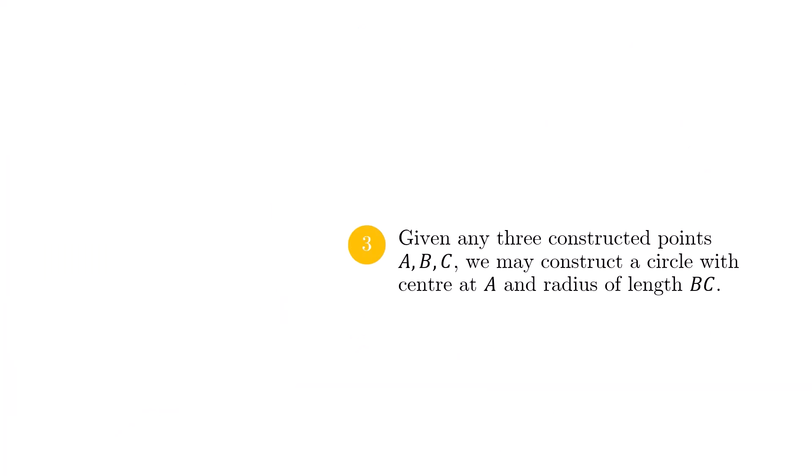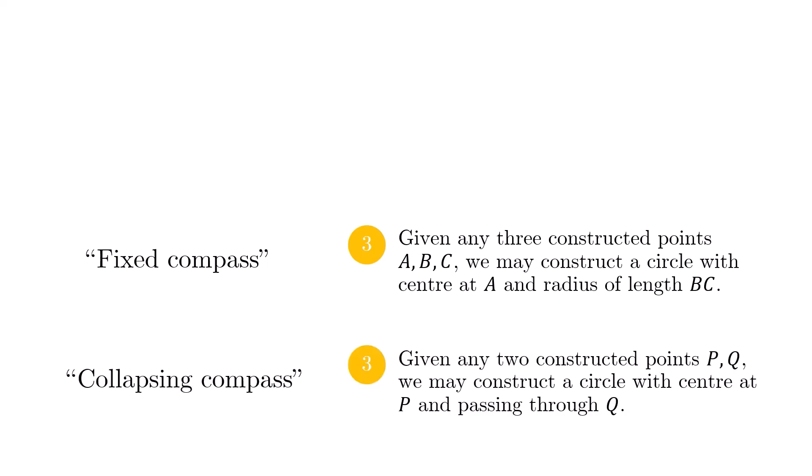A quick comment on rule number 3. Some of you may realize that this compass is more powerful than maybe what Euclid had. This compass is able to retain distance BC when it is lifted and placed down again with the pivot at A. This is known as a fixed compass. Some harder versions of the rules only allow a collapsing compass, meaning that the compass collapses together whenever it is lifted off the page. For such a compass, the centre of the circle must be one of the two points P or Q.